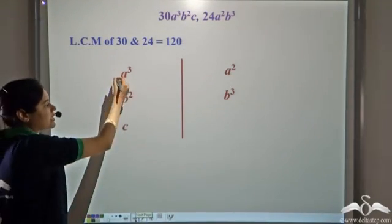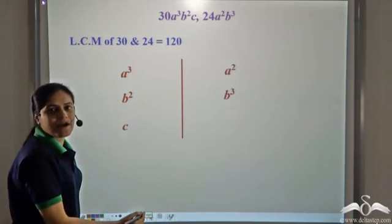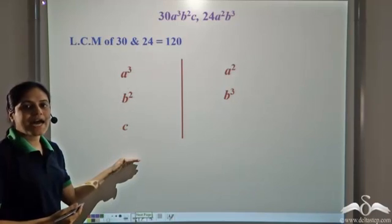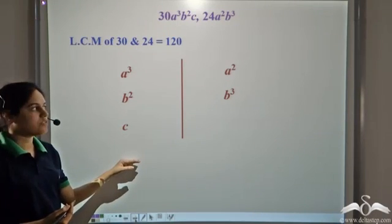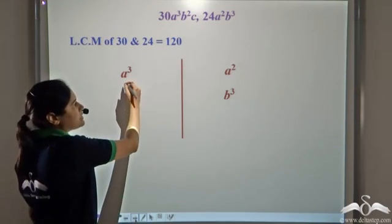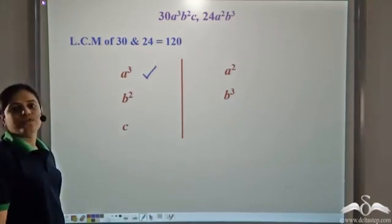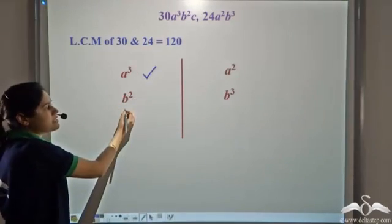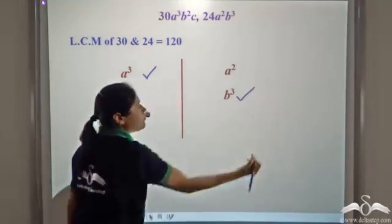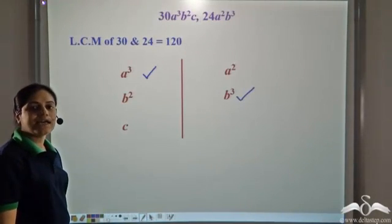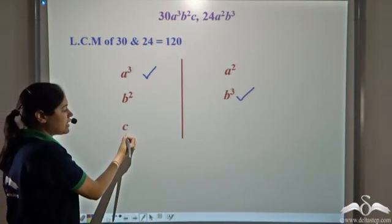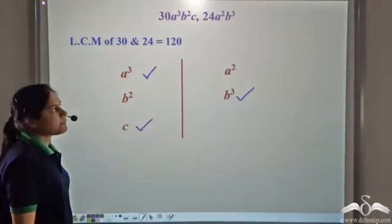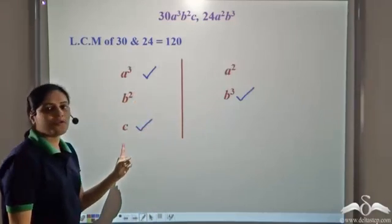Now we need to calculate the LCM of the algebraic part. We consider all the variables and take the highest powers. So we consider a and take a³ because a³ is the highest power of a. We consider b and take b³ because b³ is the highest power of b. We consider c and take c because c only appears in one term. So we take the highest power of all variables.